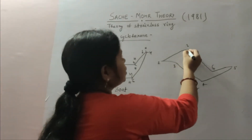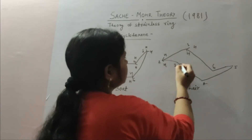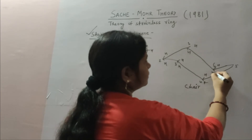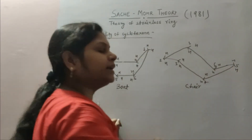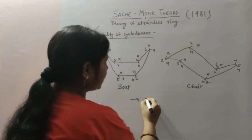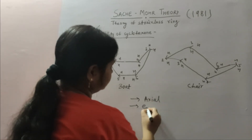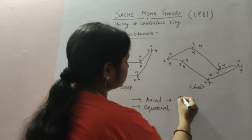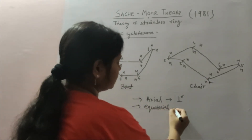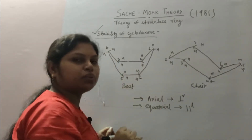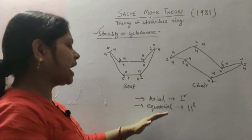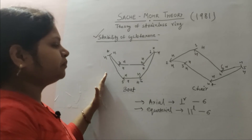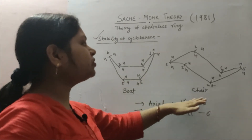In the chair form also, each carbon holds two hydrogens. These hydrogens can be divided into axial and equatorial hydrogens. All the hydrogens which are perpendicular to the plane are axial, and those which are parallel to the plane are equatorial. Both the boat and chair forms have six axial and six equatorial hydrogens. In ordinary conditions, cyclohexane exists in the chair form.